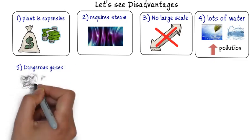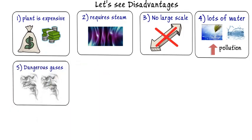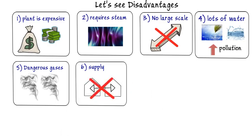Fifth is, geothermal energy sources are close to volcanic activity. It is not dangerous every time but sometimes gases are highly dangerous. Sixth is, we cannot change supply.